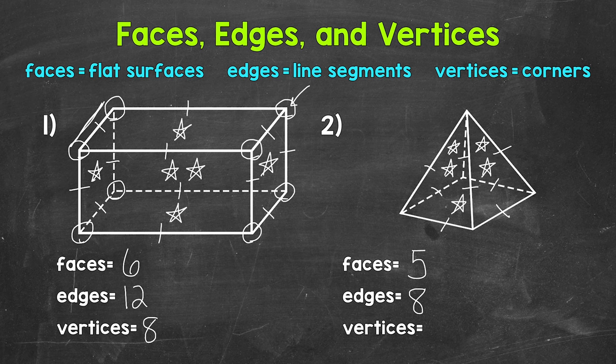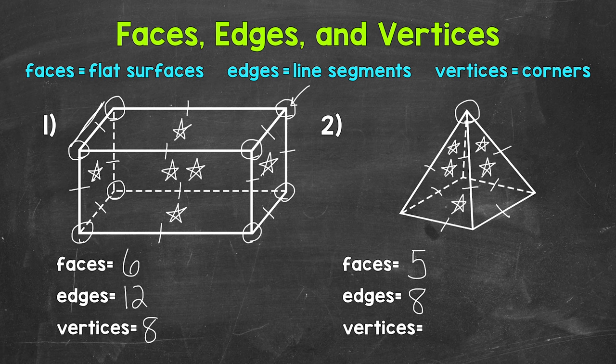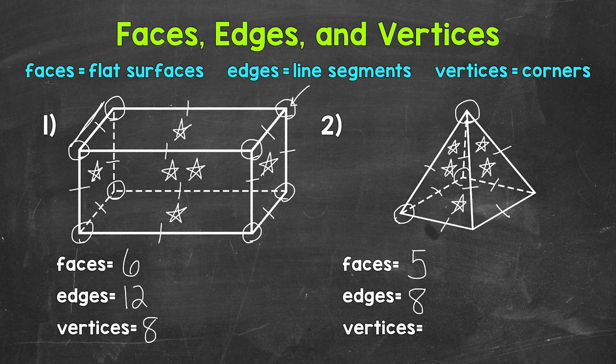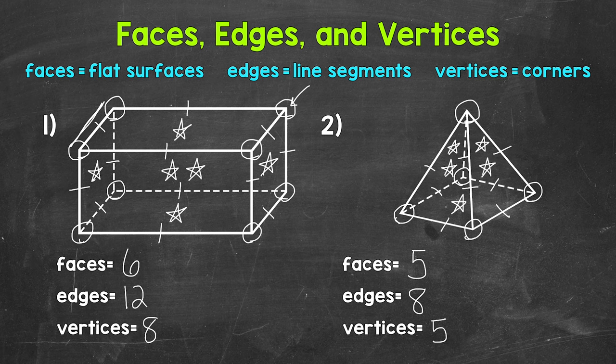Now let's identify and count the vertices. We will start with the vertex up top. Now let's go around the base. So we will start over here with two, three, four, and five. So five total vertices. So there you have it.